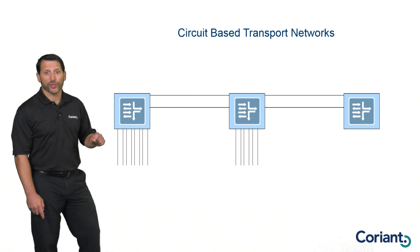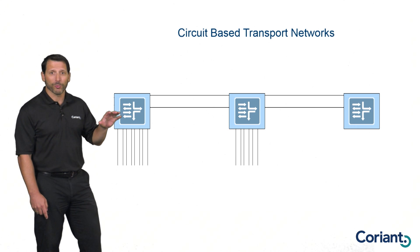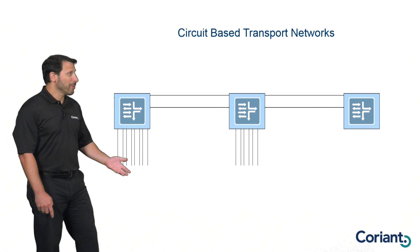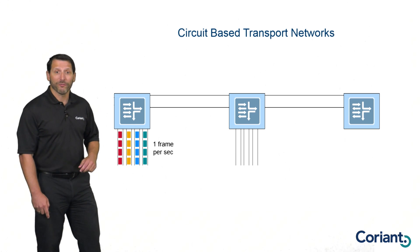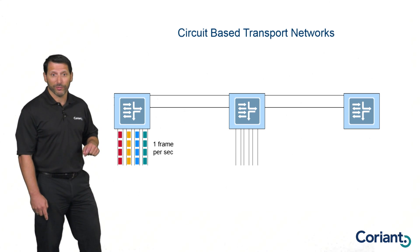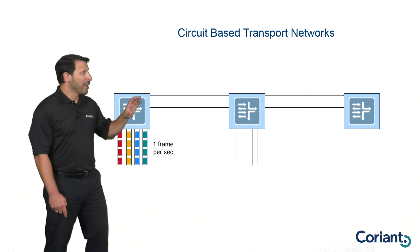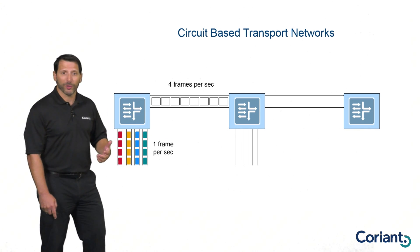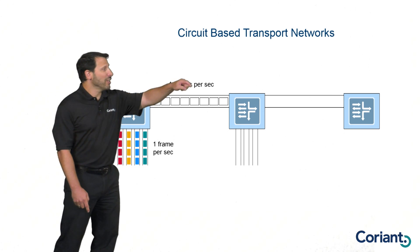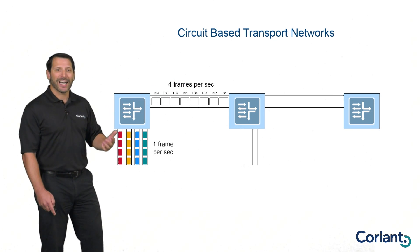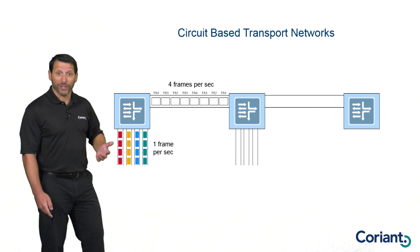We're going to start off by taking a look at circuit-based transport networks. Circuit-based networks operate by transmitting frames at very regular intervals. For example, let's say I have this location with three incoming services, and I have frames coming in at one frame per second on each of these individual interfaces. I can aggregate and multiplex those different physical interfaces onto a single interface transmitting at four times the speed — four frames per second. Each one of these frames is marked as a different time slot, so I have four different time slots to work with.